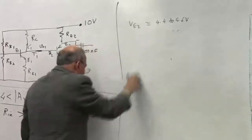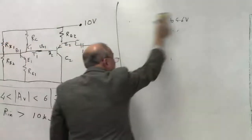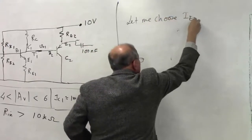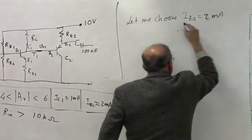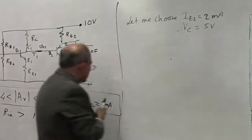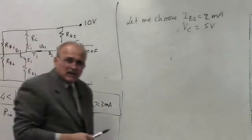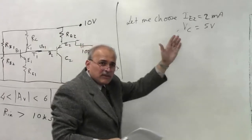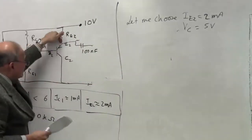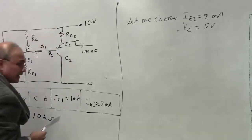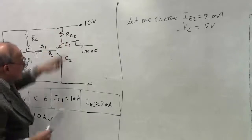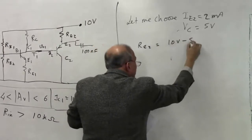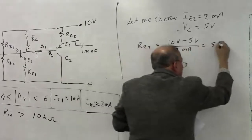Since the current has to be approximately 2 milliamps, let's choose IE2 as exactly 2 milliamps and VE2 as exactly 5 volts. Then RE2 equals (10 V − 5 V) / 2 mA = 5 kΩ. Unfortunately 5k is not in the component box, so you will need to play around — perhaps changing the current slightly from 2 mA or the voltage from 5 V so that RE2 comes out to an available value. For example, using 4.7k would require adjusting the target voltage accordingly.